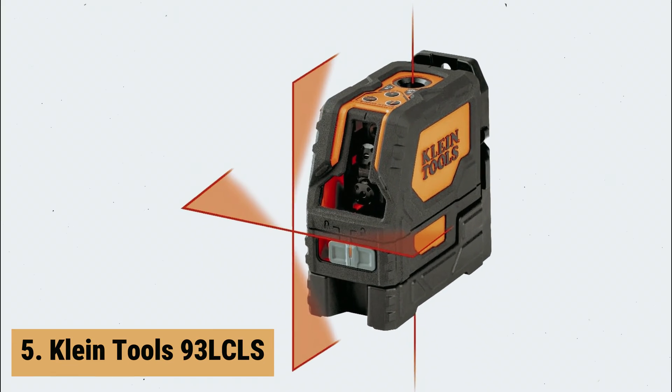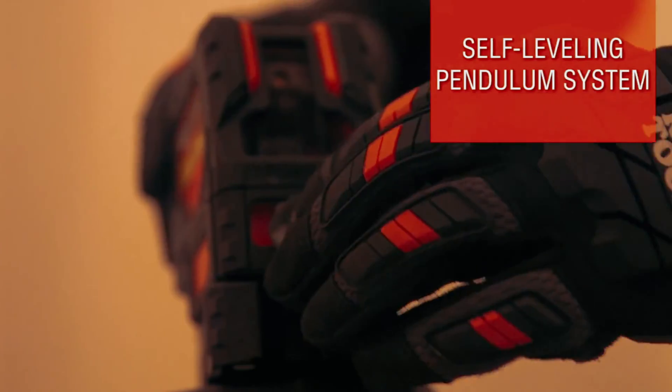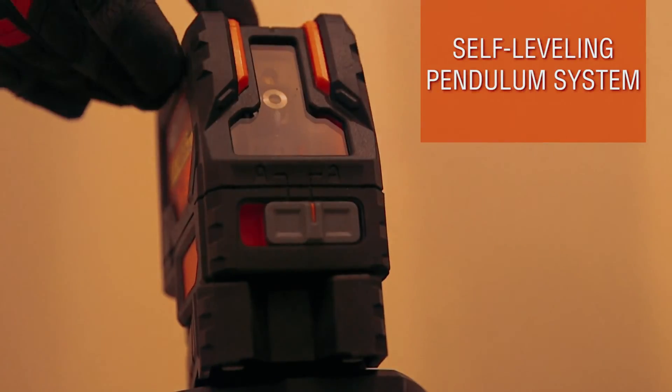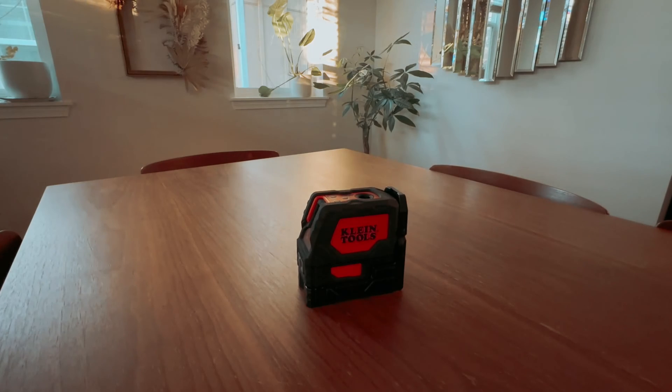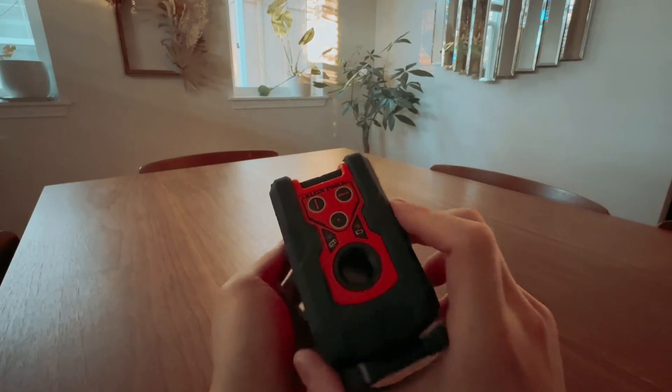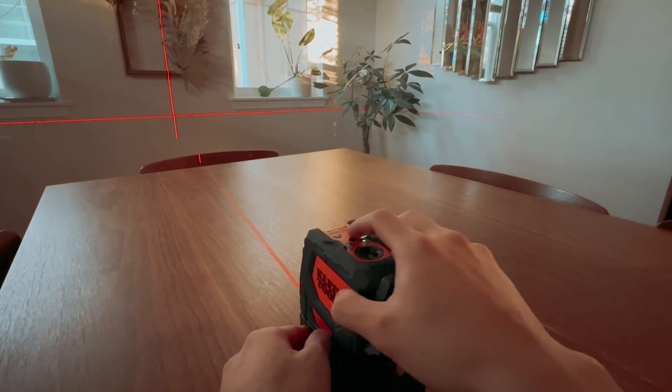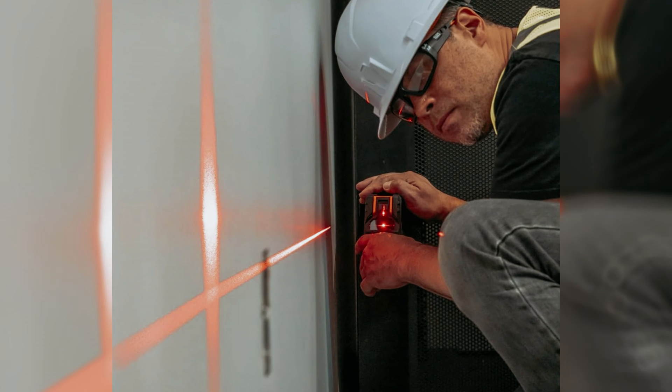At number 5 on our list is the Klein Tools 93LCLS. The Klein Tools 93LCLS Laser Level is a reliable and versatile tool that makes alignment tasks a breeze. With powerful red lasers, this level offers easy-to-read horizontal and vertical lines, along with plumb spot lasers for precise overhead locations. Whether you need to align shelving, tiles, or pictures, this laser level provides accurate and clear reference lines.